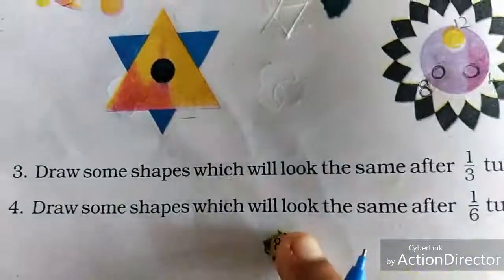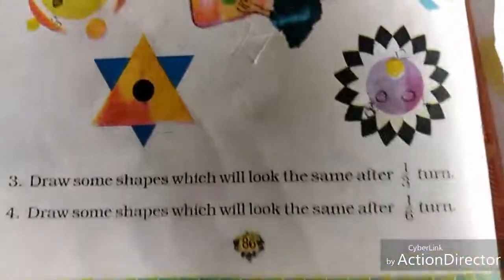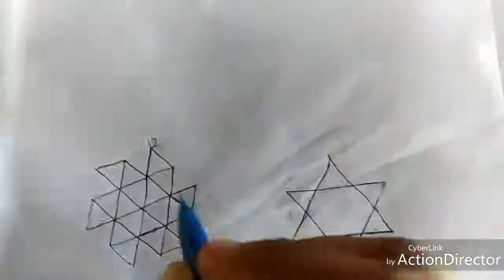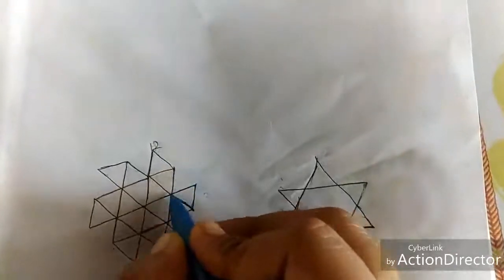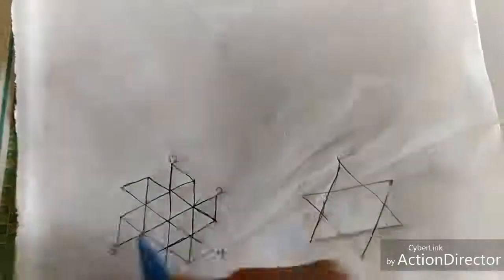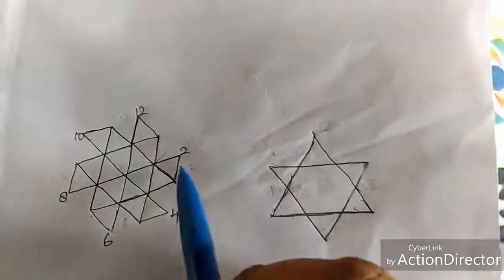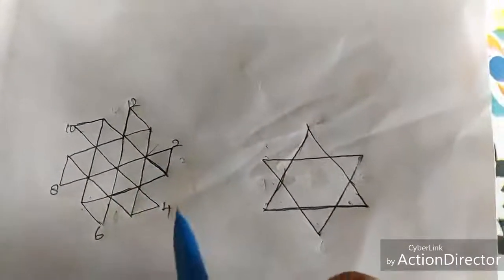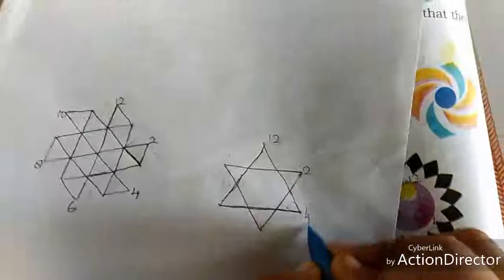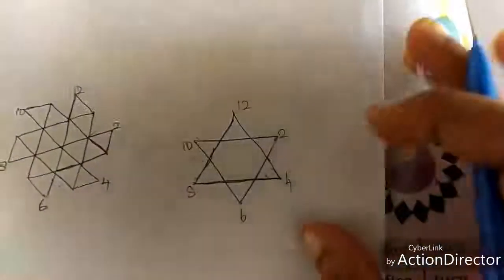Next, draw some shapes which will look the same after one-third turn. I have already drawn two shapes. See: twelve, four, eight — if you turn one-third, it won't change. Here also, twelve, four, eight — after one-third turn, the picture will look the same. Next, draw some shapes which will look the same after a one-sixth turn. I already have drawn one. You have to mark like this: twelve, two, four, six, eight, ten. If you change it, the twelve will come in the second place — the shape will not change after one-sixth turn. This picture also won't change. Thank you, students.